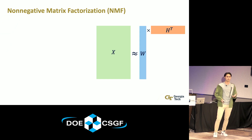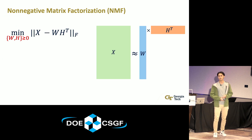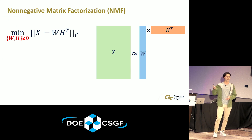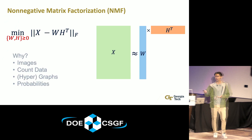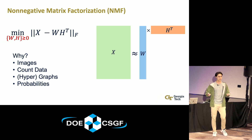There are many variants of this problem. My group usually works on one called non-negative matrix factorization, which has the same structure as the SVD, but we add an additional constraint that W and H need to be non-negative — so X is also typically non-negative. This just means that elements of W and H are either zero or some positive real number. A lot of the time X comes from a data domain where the data itself is non-negative — images, count data, graphs, probabilities, all kinds of stuff.